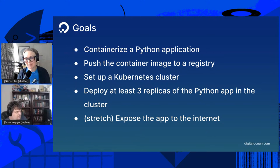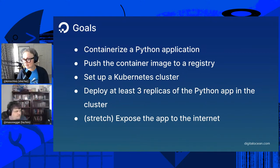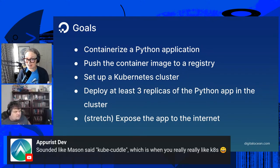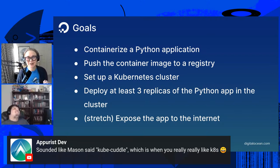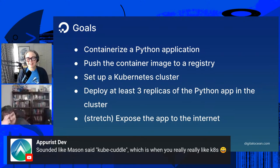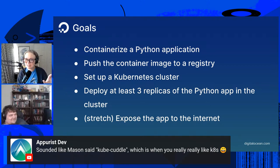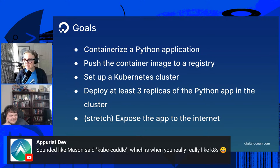While we're waiting for the load balancer, let's review our goals — we've actually gotten to our stretch goal. We've containerized a Python application, pushed the container image to the DigitalOcean Container Registry, set up a Kubernetes cluster, deployed at least three replicas of the Python app, and now we're trying to expose the application to the internet via a LoadBalancer service. Lots of magic is happening underneath the hood that we aren't doing.